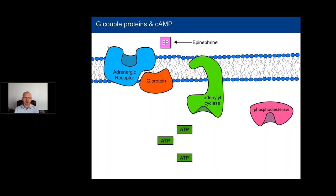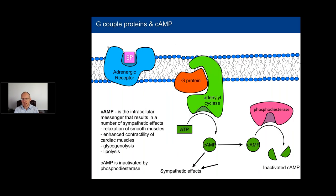When epinephrine or similar substances bind to adrenergic receptors, they are coupled to G proteins. The G protein migrates and binds to adenylyl cyclase, an enzyme that converts ATP to cyclic AMP (cAMP), which is an intracellular messenger responsible for communicating the sympathetic effects. There's also an enzyme called phosphodiesterase that breaks down cyclic AMP, inactivating it. When cyclic AMP levels are elevated, it causes smooth muscle relaxation, certain muscle contractions, increased sugar availability, and fat breakdown.